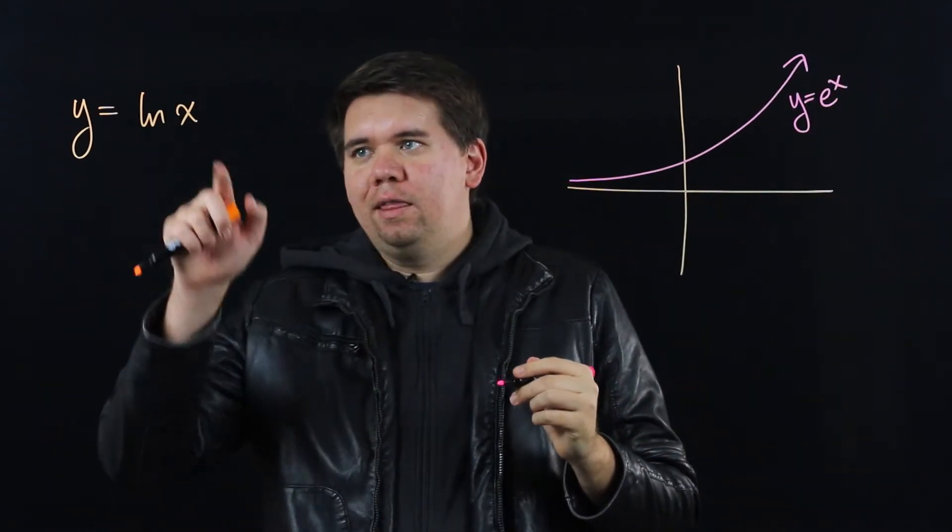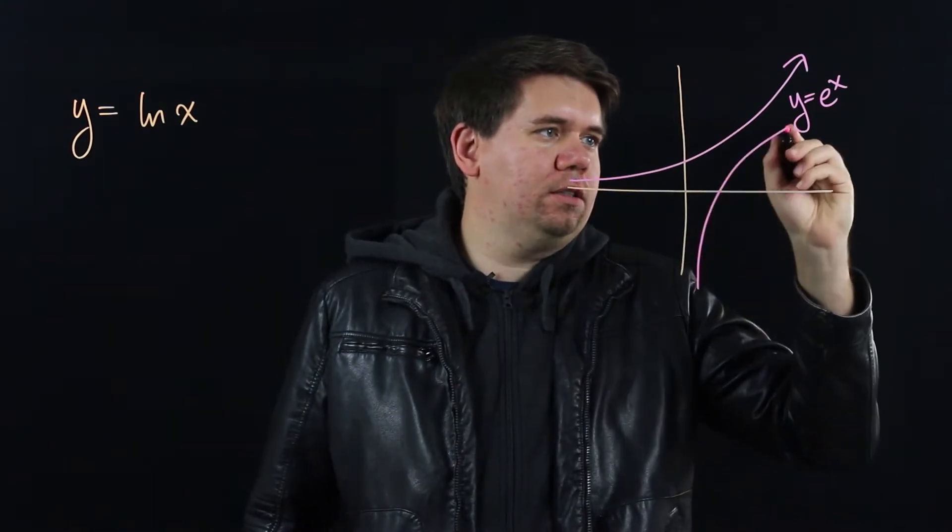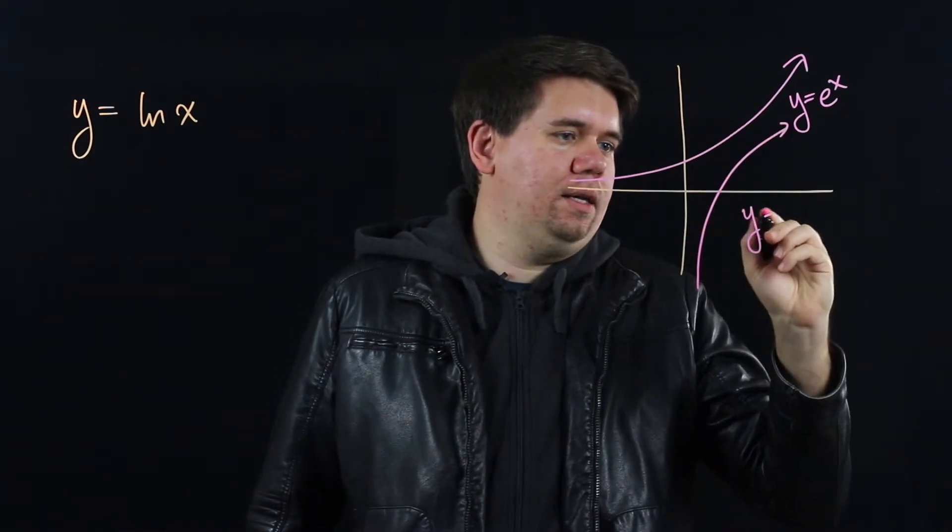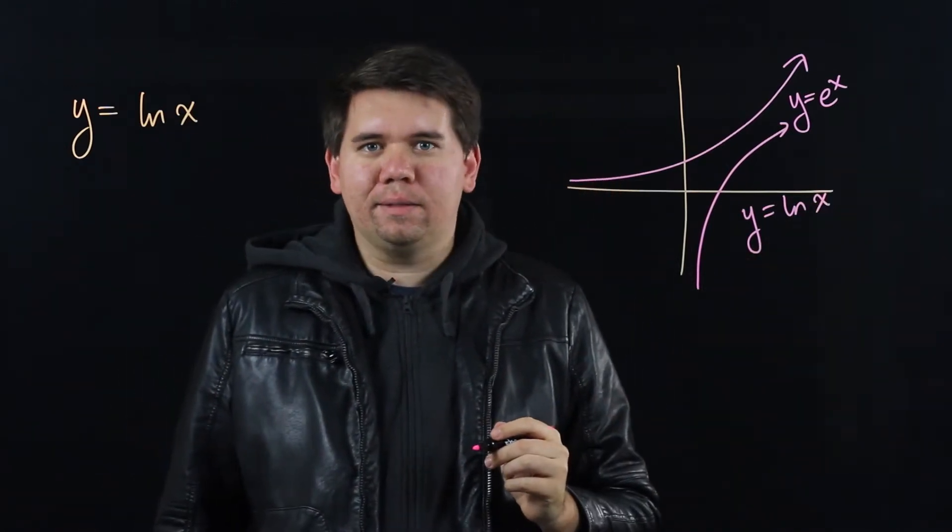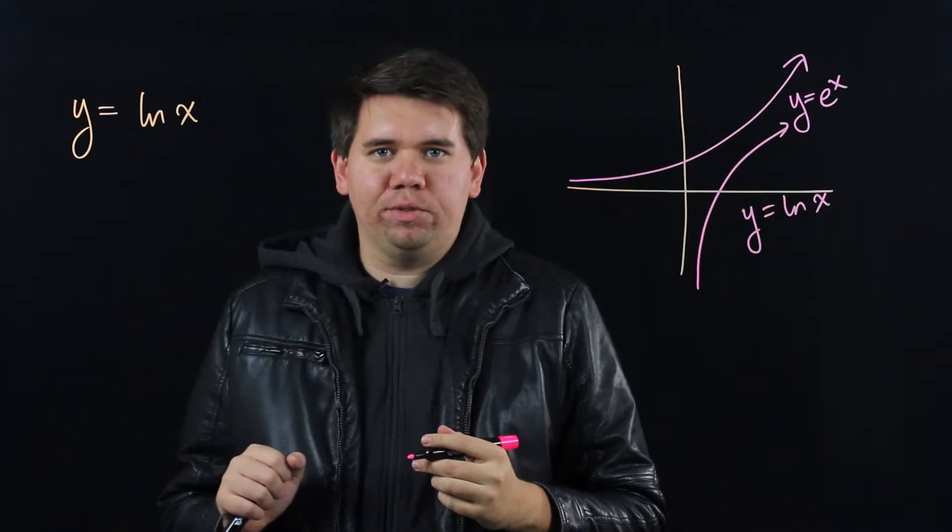By contrast, the natural log function looks like this, y equals the natural log of x. How can we calculate its derivative?